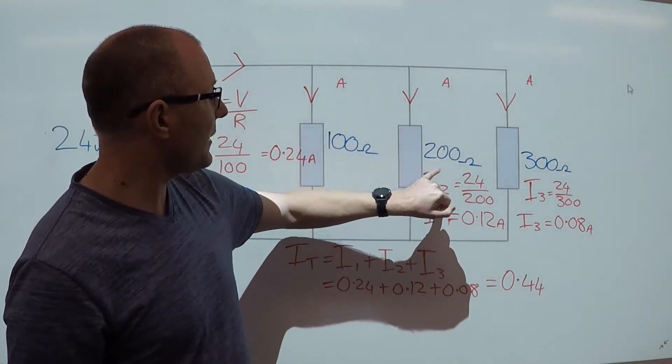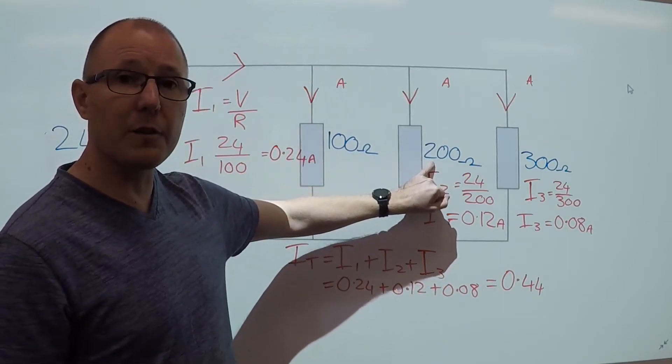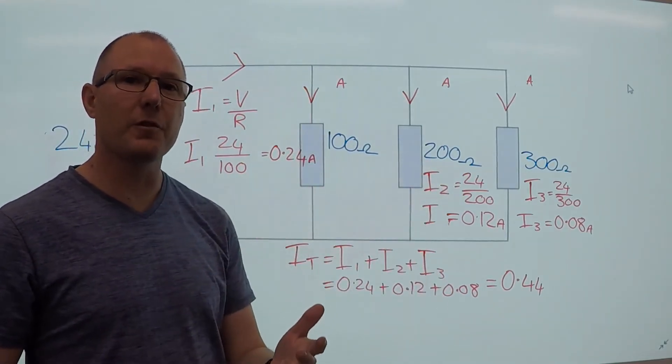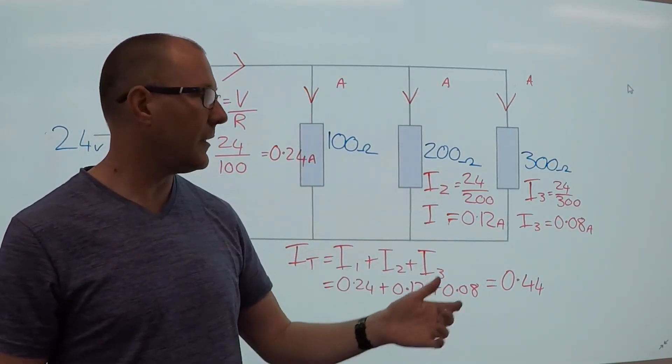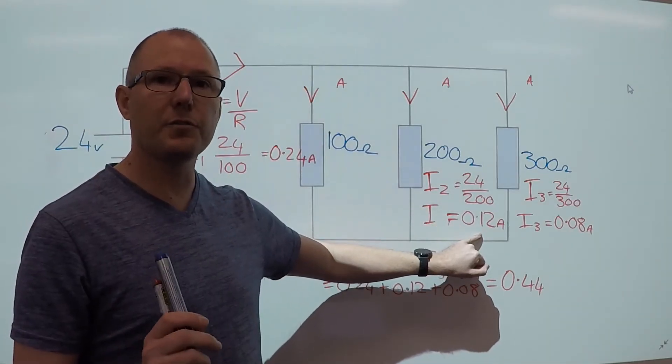In the next part of the circuit, we've got 200, so 24 divided by 200 ohms equals 0.12 amps.